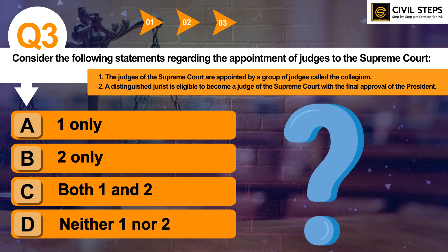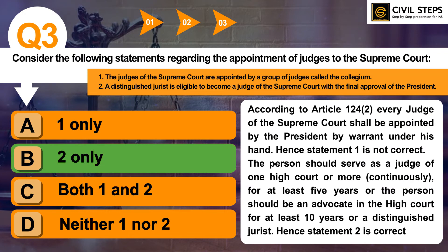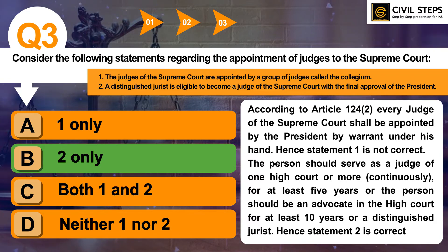The correct answer of question 3 is Option B, 2 only. According to Article 124, sub-clause 2, every judge of the Supreme Court shall be appointed by the President of India by warrant under his seal. Hence, Statement 1 is not correct. About Statement 2, the person should serve as a Judge of one High Court or more continuously for at least 5 years, or be an Advocate in the High Court for at least 10 years, or be a Distinguished Jurist. Hence, Statement 2 is correct.